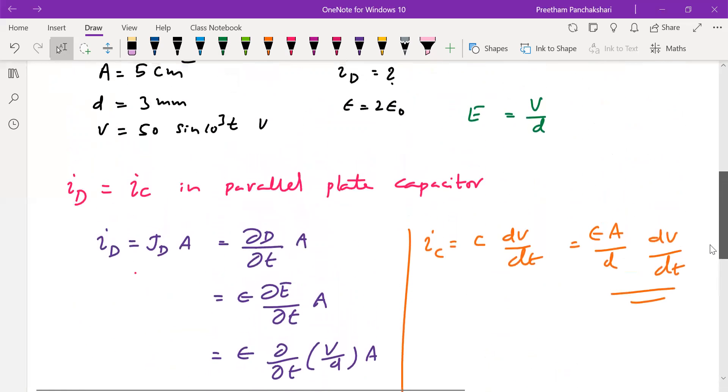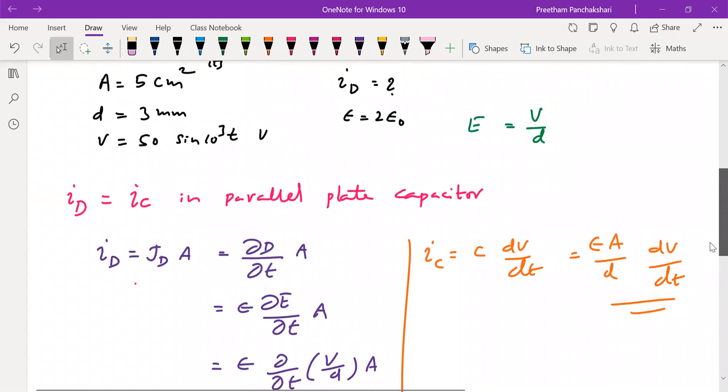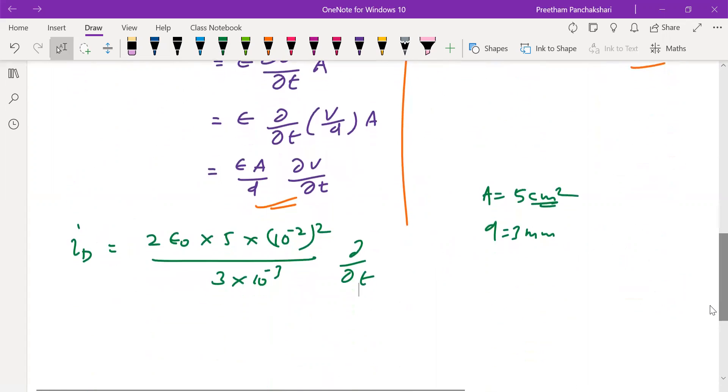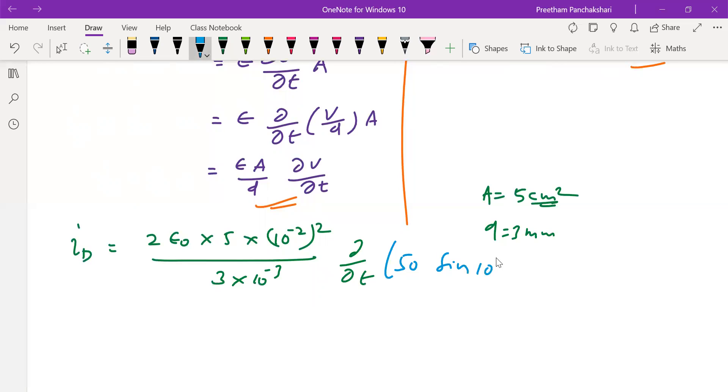And now the differentiation of the voltage with respect to time. Let us see what is that given: 50 sin 10 cubed t. 50 sin 10 cubed t to be taken as voltage, sinusoidal voltage.